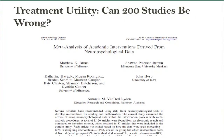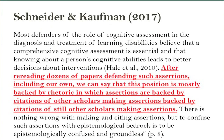Then we've got the treatment utility part — the whole ATI assumption. Burns et al. did a meta-analysis of over 200 studies looking at cognitive and neuropsychological data being used to derive academic treatments, and found that beyond phonological awareness for a phonics intervention, the effects for all other variables were basically null. Phonological awareness for phonics is really, really good, and there was some inconsistency with working memory, so it wasn't all terrible. Schneider and Kaufman — proponents of PSW — said after rereading dozens of papers defending such assertions, this position is mostly backed by rhetoric, in which assertions are backed by citations of other scholars making assertions backed by citations of still other scholars making assertions. It's just not there.